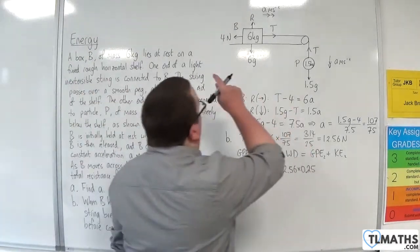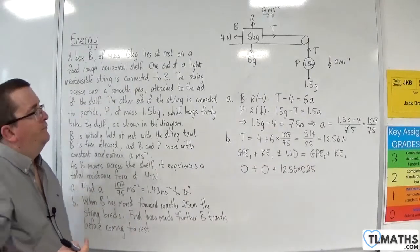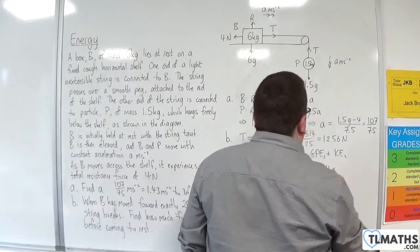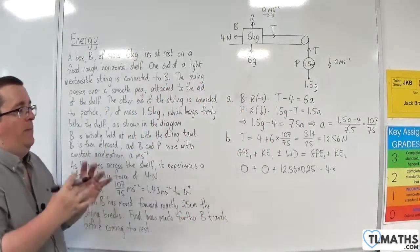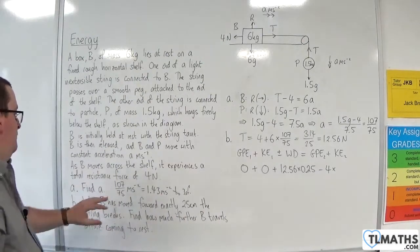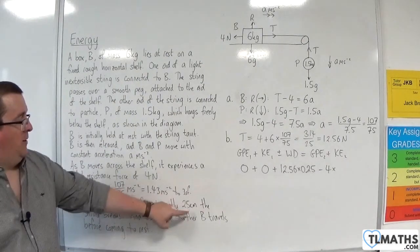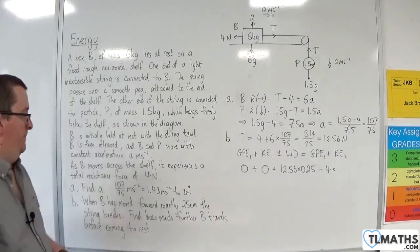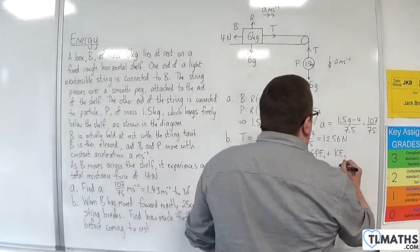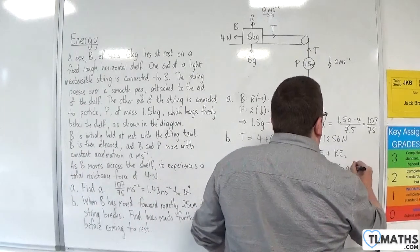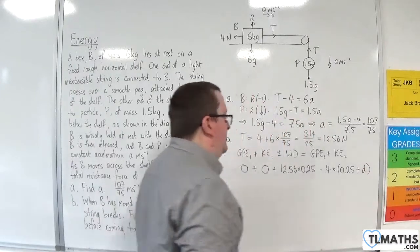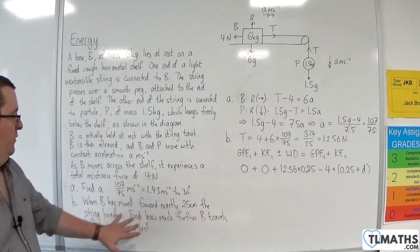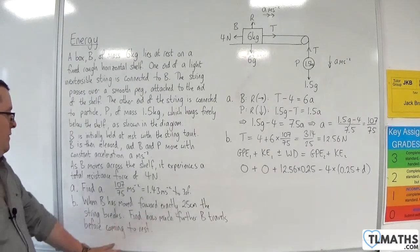Now, the frictional force, however, is constant throughout the whole motion. So, that will be take away 4 times. Now, we need to think about what the distance is. Now, it's going to travel 25 centimetres first, and then there's extra distance, and that's what I want to calculate. So, I want 0.25 plus some distance D. OK, and I'll call that D, because that's what I want to calculate here. Find how much further B travels before coming to rest.